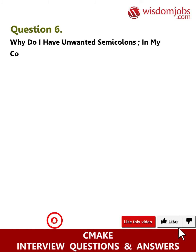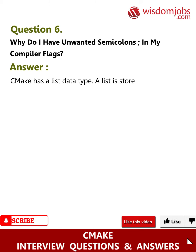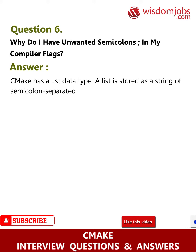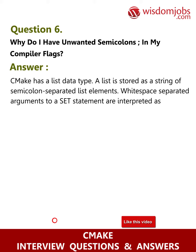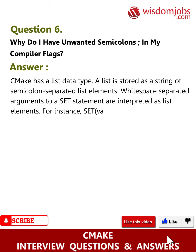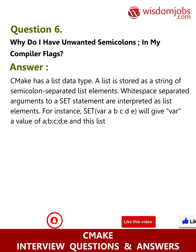Question 6: Why do I have unwanted semicolons in my compiler flags? Answer: CMake has a list data type. A list is stored as a string of semicolon-separated list elements. Whitespace-separated arguments to a set() statement are interpreted as list elements. For instance, set(VAR a b c d e) will give VAR a value of a;b;c;d;e.